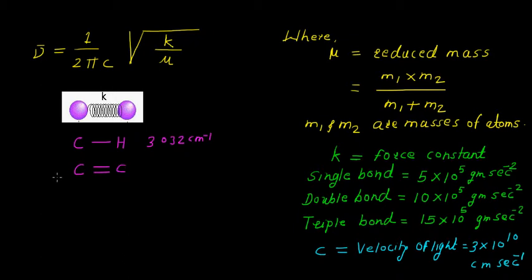In this case, we must remember that we have a double bond and that is why the force constant value will change from 5 to 10. So this will be 10 × 10⁵ gram per second squared. And similarly,